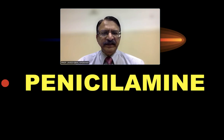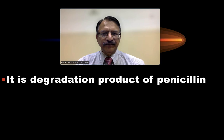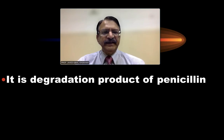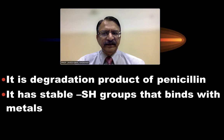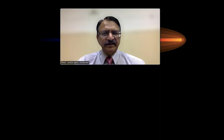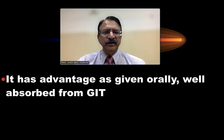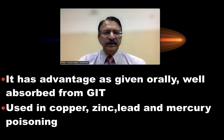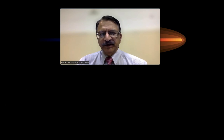Now, penicillamine is a degradation product of penicillin. It has a stable sulfhydryl group that binds with metals. It has the advantage of being given orally and is well absorbed from the GIT. It is used in copper, zinc, lead, and mercury poisoning.